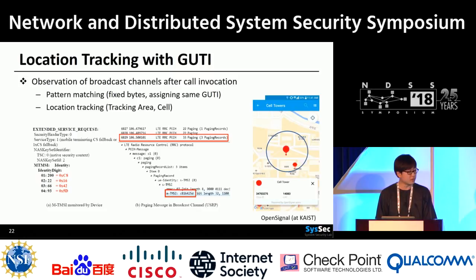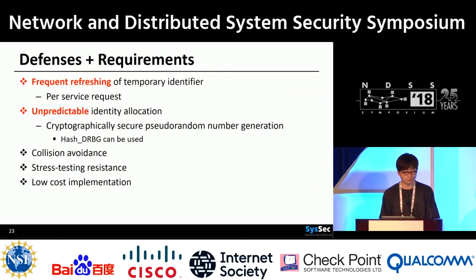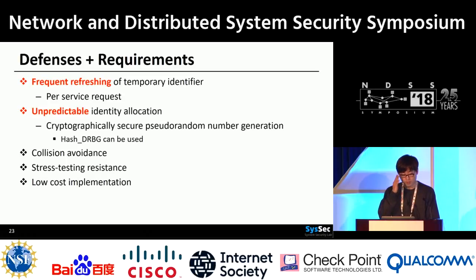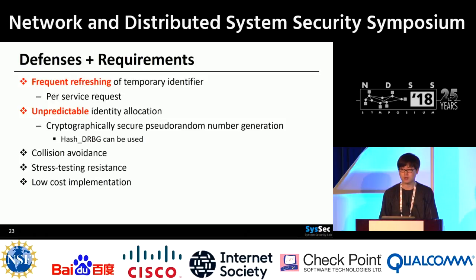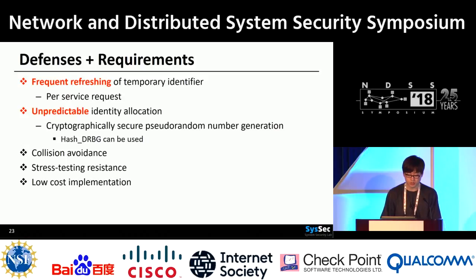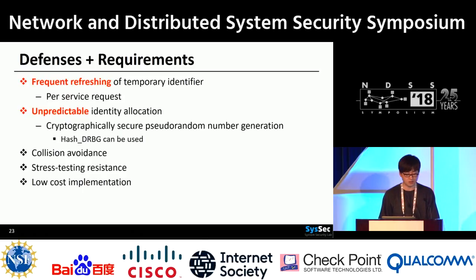How can telecoms prevent this attack? GUTI reallocation procedure must be secure. The requirements are: first, the temporary identifier must be changed per service request; second, identity reallocation must be unpredictable. A lightweight, cryptographically secure pseudorandom number generator such as Hash DRBG could be used. ID allocation should not cause collisions and should be resistant to stress testing. It would also be better if implemented at low cost. For details of our solution, please refer to our paper.